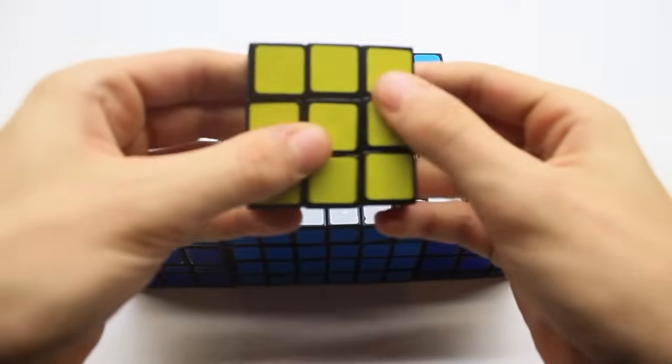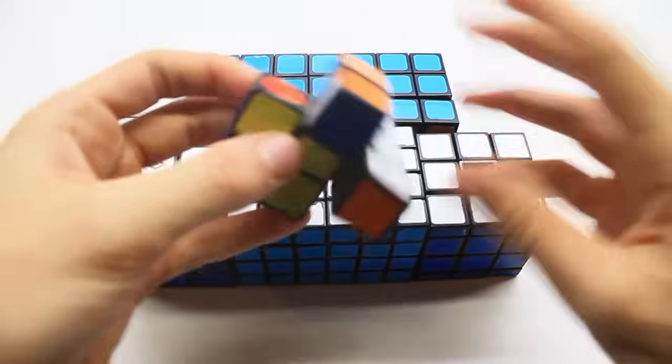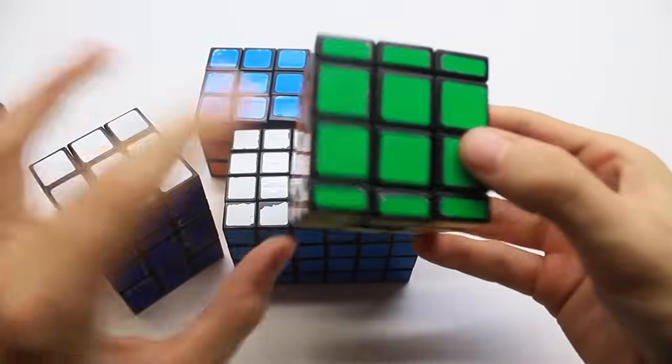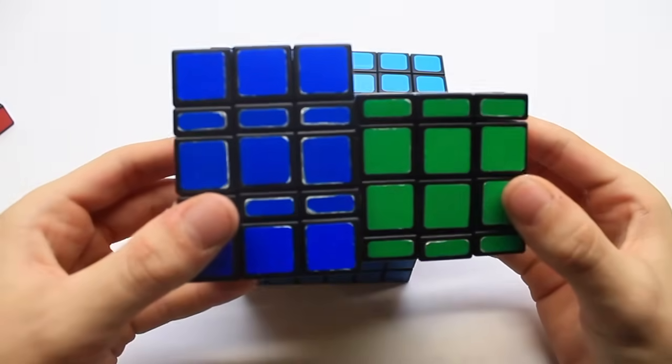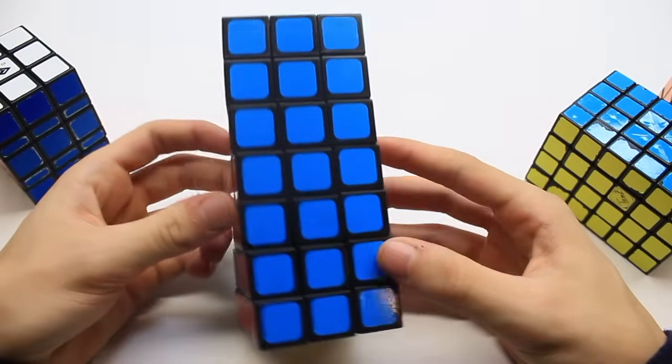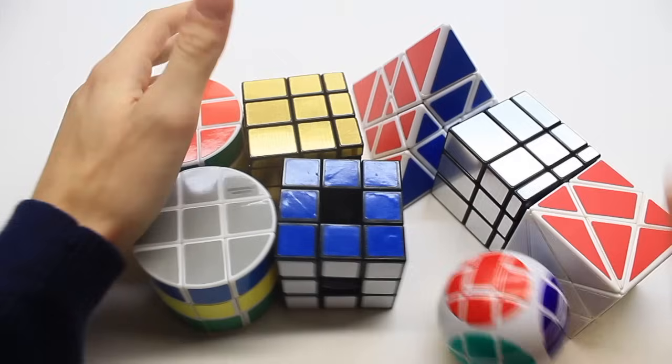On to some real cuboids. I have a 1x1x3, this is like a super floppy, I think it's called, and that's awesome. I have this 3x3x4 from the leftover pieces from this 3x3x5. I have the Calvin's Puzzle 4x4x6 and the fully proportional 3x3x7.